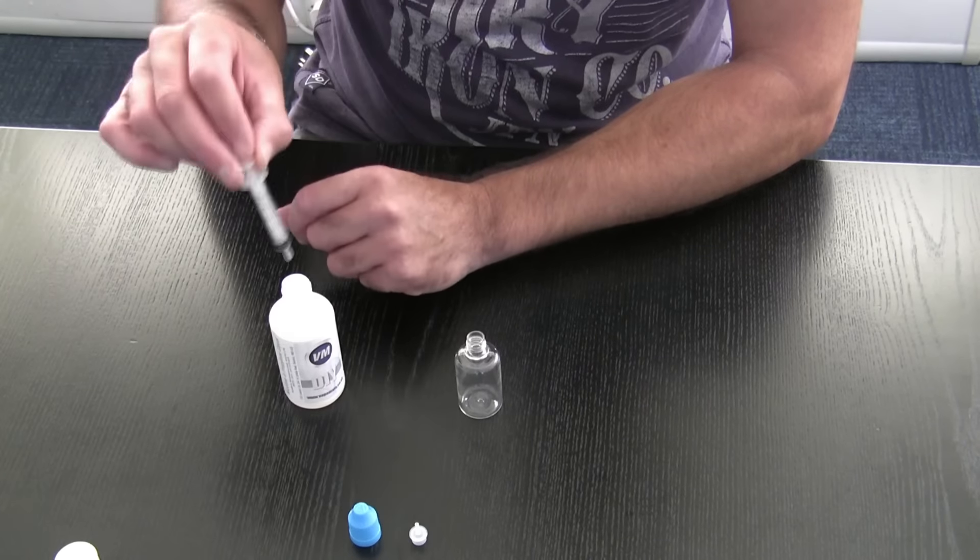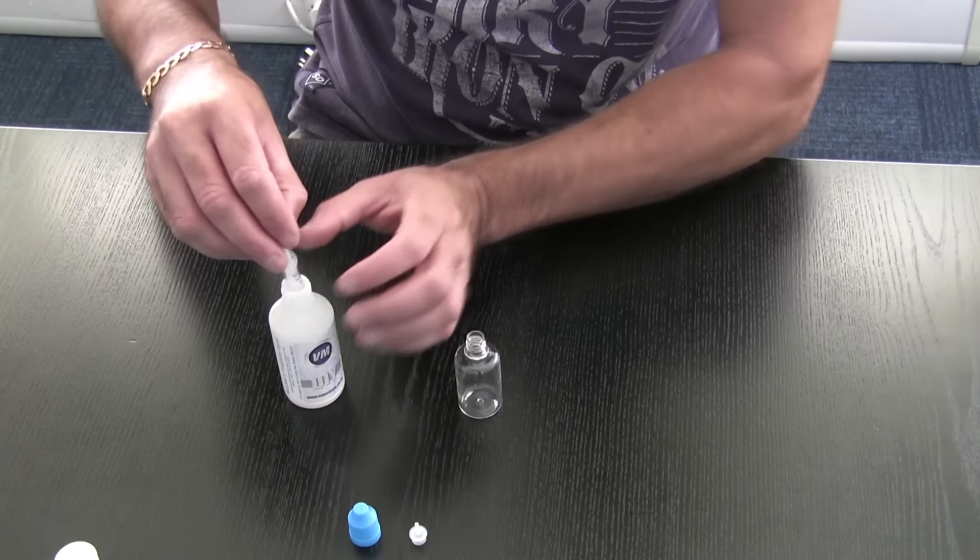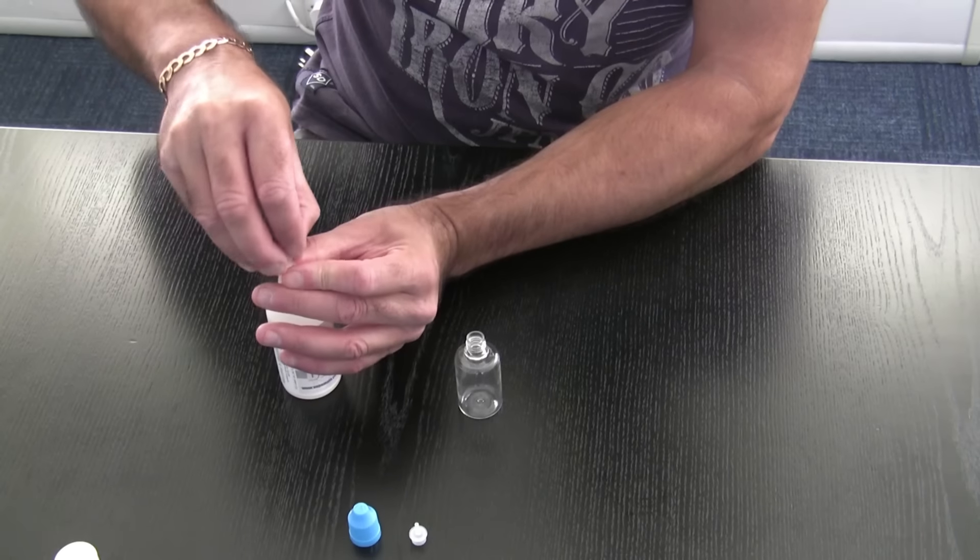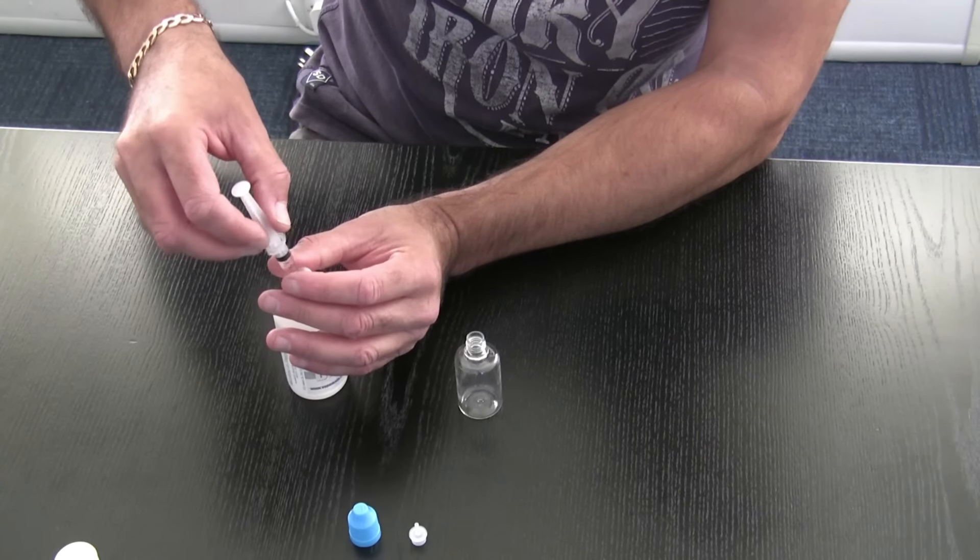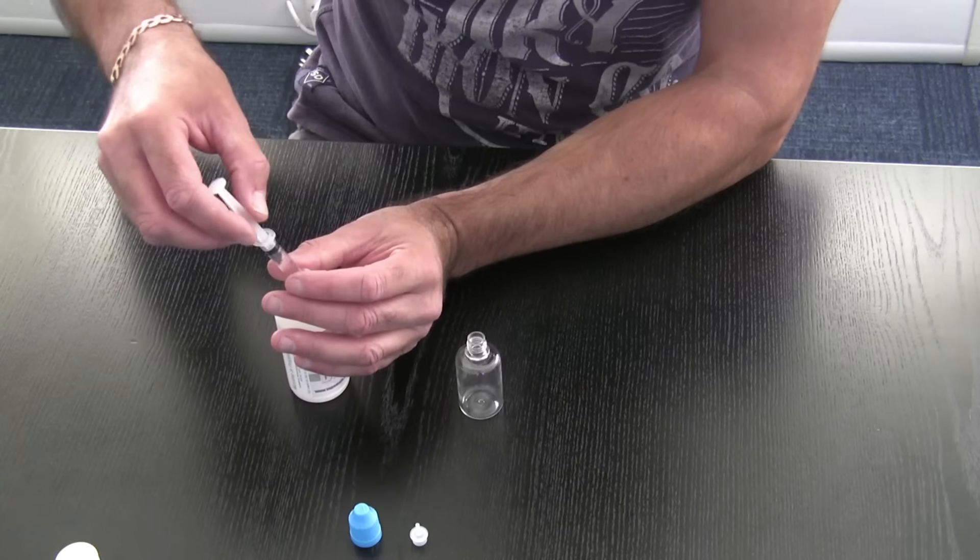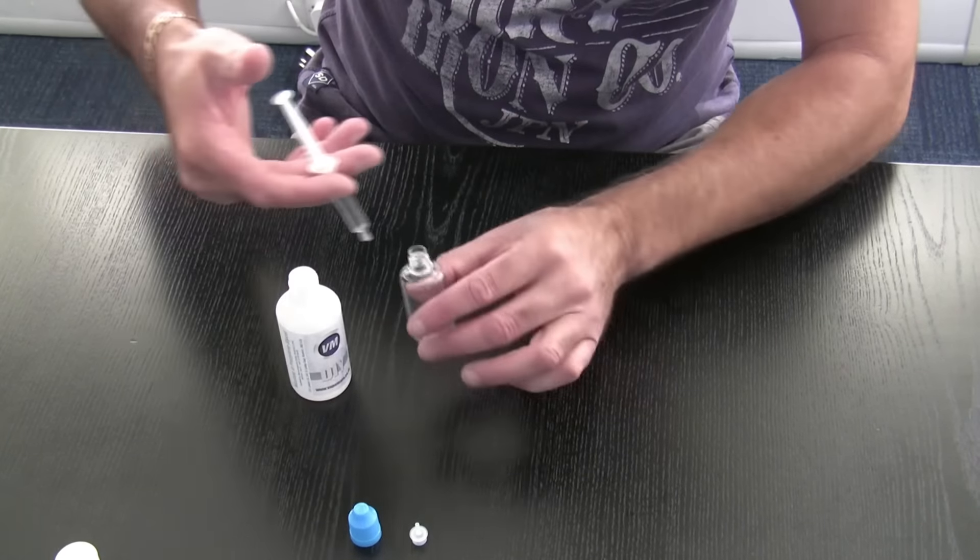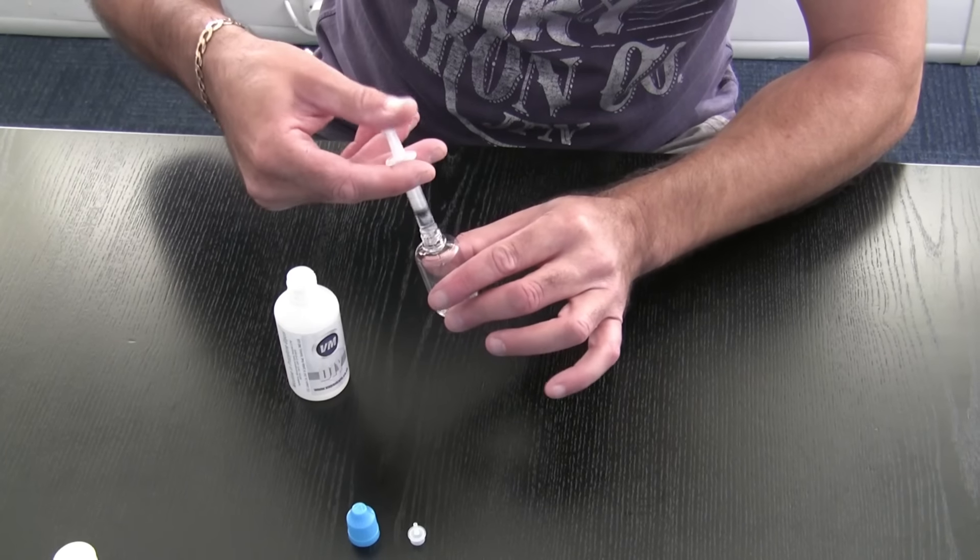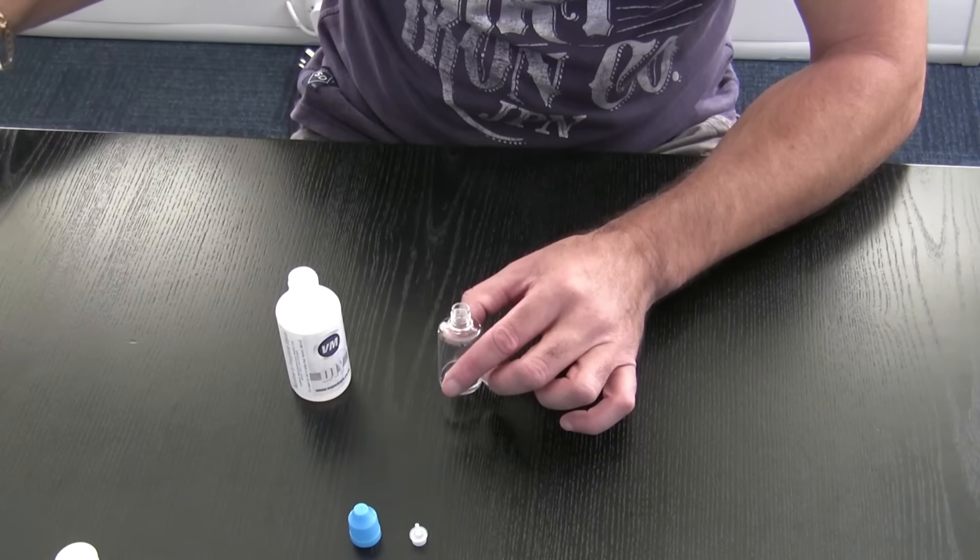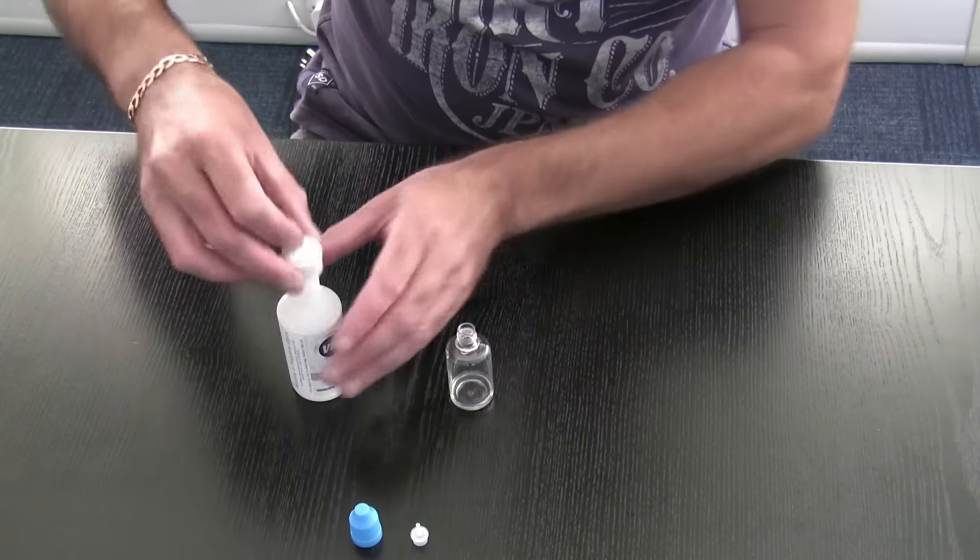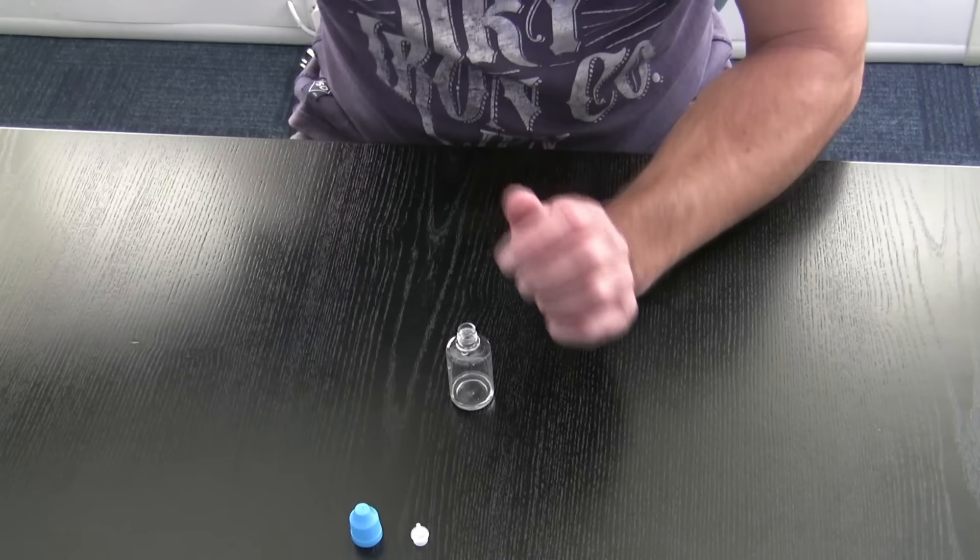A syringe. Make sure it's nice and clean so you don't cross over any flavors or any liquids. We will pull up two and a half milliliters. There we go. And then just pop that straight in there. It's as simple as that. Put your lid back on nice and safe and stick it out away.